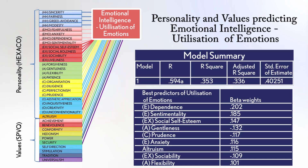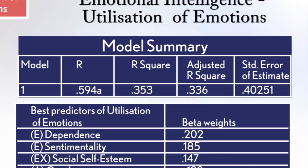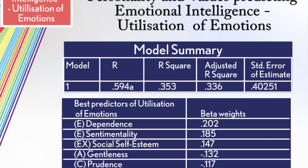The third component of emotional intelligence, as identified by Austin and colleagues, is called utilization of emotions — the degree to which a person is able to use emotional information to make decisions and determine the actions they're likely to take. The question is whether personality and values predict this EI component. The answer is yes. The regression model shows around 34% accuracy of prediction, with a correlation well over 0.5.